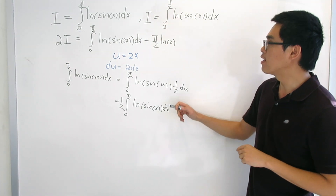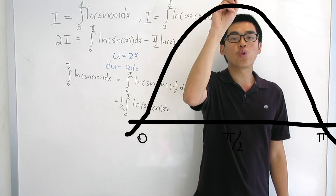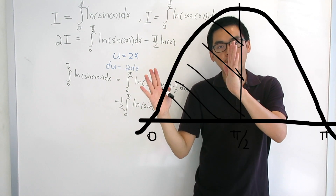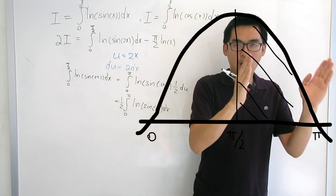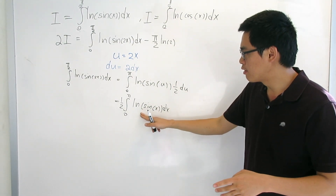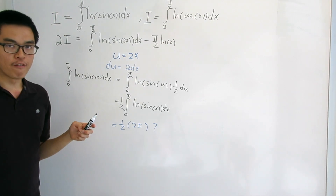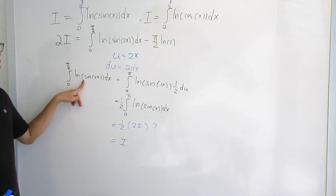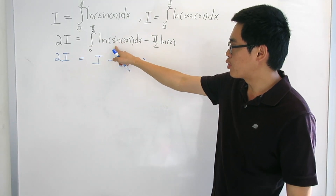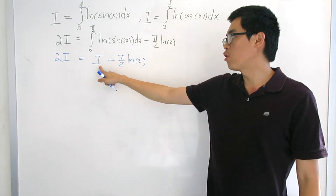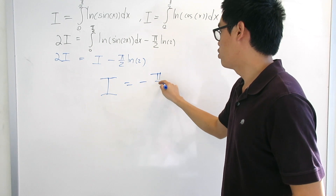To compare this to the original I, consider the graph of sine: it starts at 0, peaks at π/2, then returns to 0 at π. Because it's symmetric about π/2, integrating from 0 to π/2 and from π/2 to π gives equal contributions. So ∫₀^π ln(sin x) dx = 2·∫₀^(π/2) ln(sin x) dx = 2I. Therefore (1/2)·∫₀^π ln(sin x) dx = I. Substituting back: 2I = I − (π/2)·ln 2, so I = −(π/2)·ln 2.